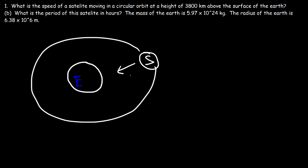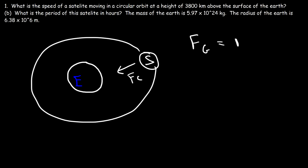This satellite has a centripetal force. Any object that moves with circular motion has a centripetal force, and it turns out that gravity provides the centripetal force in this example. This force is the gravitational force that keeps it moving in a circle. We're going to set the force of gravity equal to the centripetal force. The satellite has mass lowercase m and the Earth has mass capital M. To calculate the gravitational force between two objects, it's G times the mass of the Earth times the mass of the satellite.